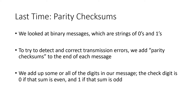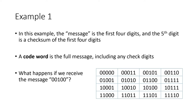In the example we worked on, we had four-digit messages, and then the checksum was the parity checksum of the first four digits. So in these examples, these first four digits are the actual message, and this fifth digit is a check digit.